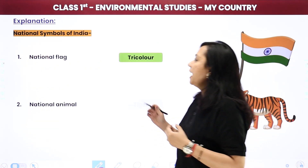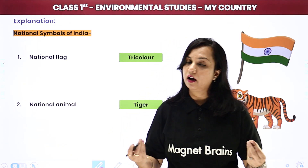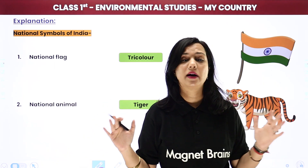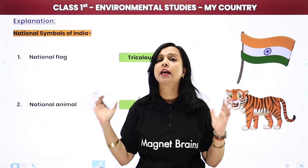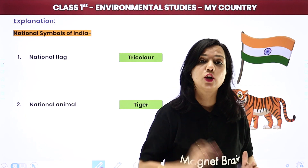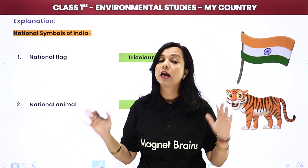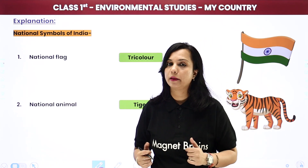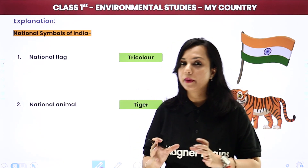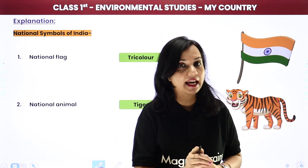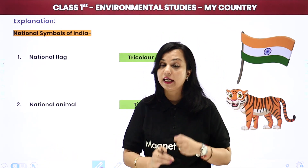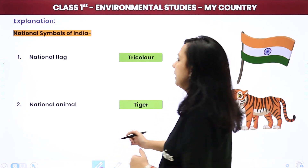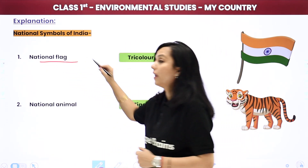Now, national symbols of India. Ab India ke baare mein hum jaan gaye ki India haamari country hai, haamara desh hai, haamari desh mein bahut saare rajya hain jinka number hai 28 aur 8 union territories. Ab children, aapko jaanna hai inke national symbols ke baare mein. Kuch aise symbols hain, kuch aise chinh hain jo haamari country ke baare mein haamko bahut kuch bataate hain. Jaise ke - national flag.